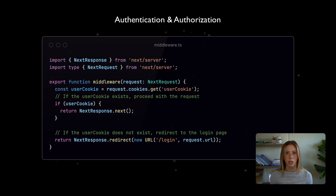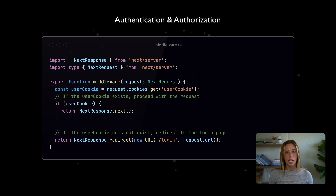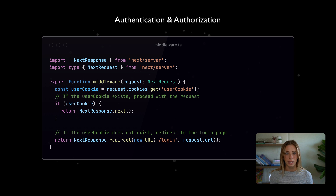Let's start by reviewing scenarios where middleware offers a good solution, beginning with authentication and authorization. When using middleware for auth, it serves as an important first layer. It runs security checks at the network's edge before requests even reach your server. By verifying users early on, it not only speeds up the process but also lightens the server's load.